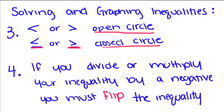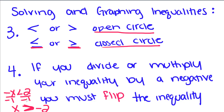The most important thing to remember when solving inequalities is that if you divide or multiply your inequality by a negative, you must flip your inequality. So if I had negative x is less than 2, when I divide by negative 1, I'm going to get x is greater than negative 2. That inequality sign has to flip, otherwise you're going to get the wrong answer.